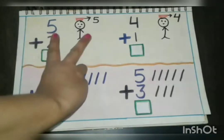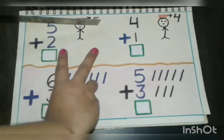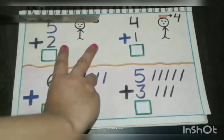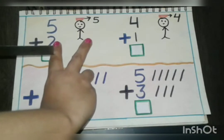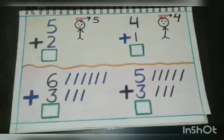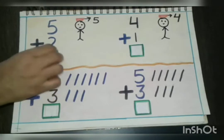We will open two fingers. So five is in our head and we will count on our fingers afterwards. Five, then what will come after five? Six. And what comes after six? Seven. So our answer is seven. Very good.